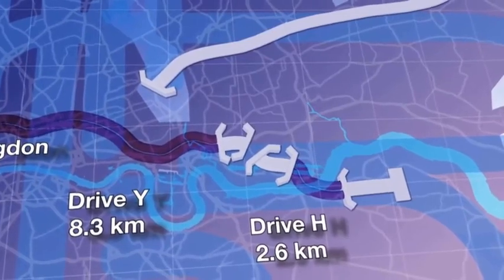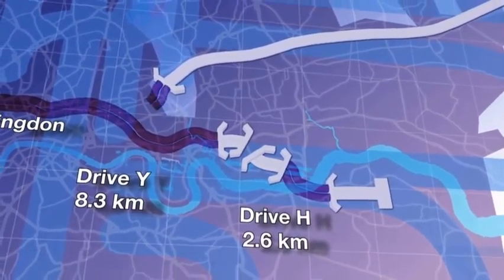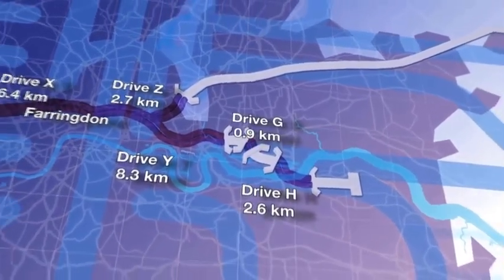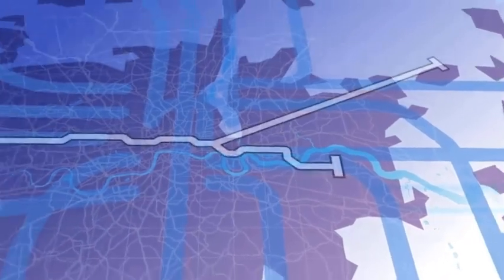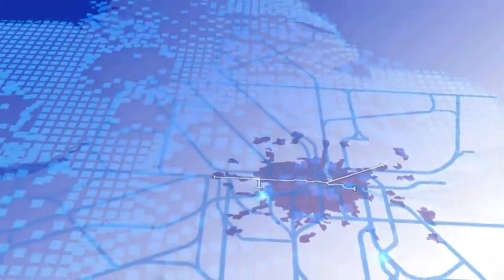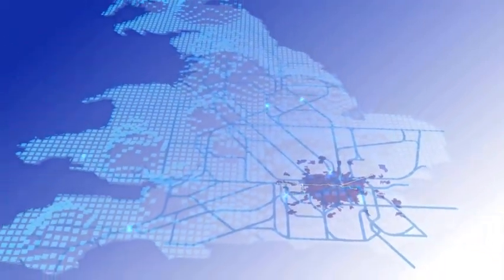A further two TBMs, Mary and Sophia, will construct the tunnels for Drive H, running underneath the Thames from Plumstead to North Woolwich, followed by Drive Z and Drive G. All the tunnels will be completed by the end of 2014, a significant milestone in the program to build the largest addition to the South East Rail Network in 50 years.